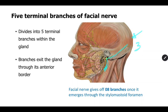Once it enters the parotid gland, the facial nerve gives another five branches inside the parotid gland. These branches exit the parotid gland at its anterior border, and these five branches are the ones that supply the muscles of facial expression.